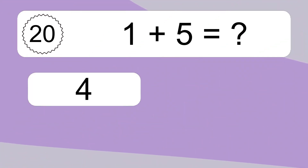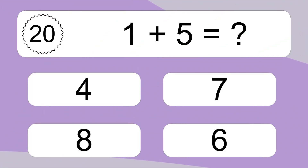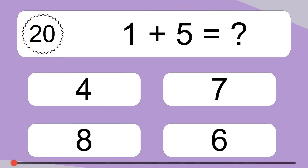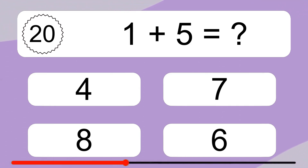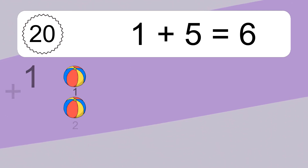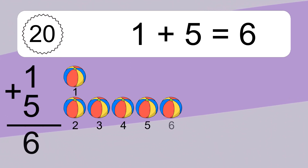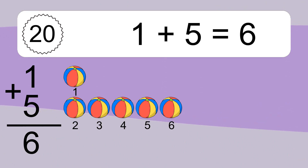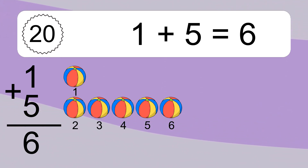1 plus 5 equals what? 1 plus 5 equals 6. Let's count it. 1, 2, 3, 4, 5, 6.